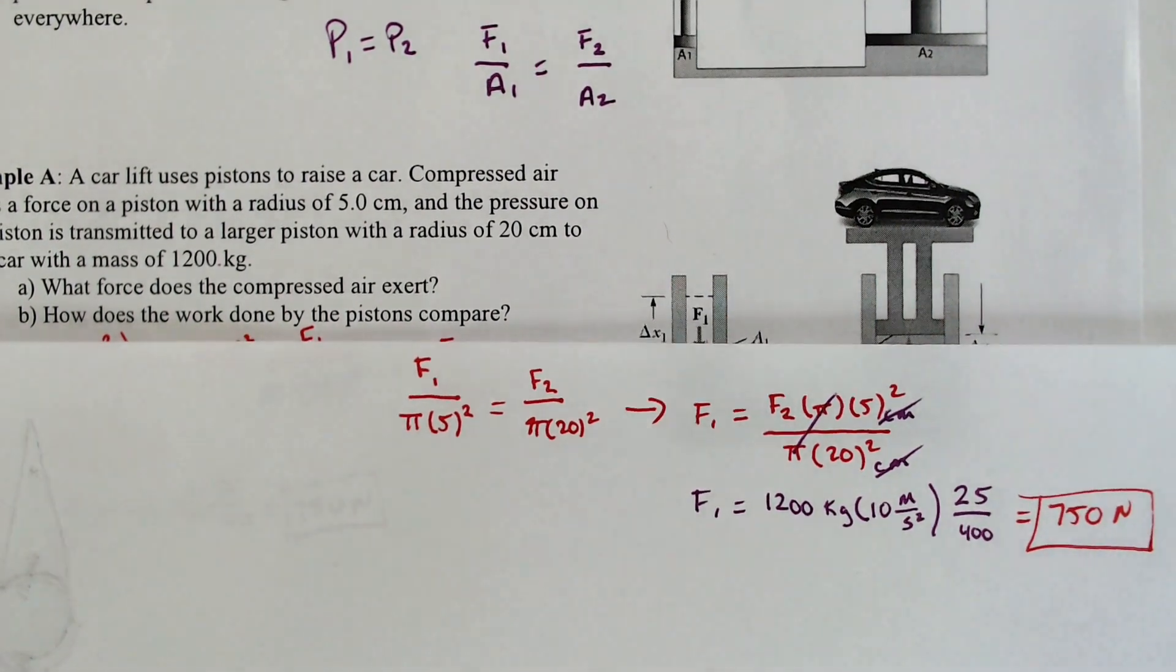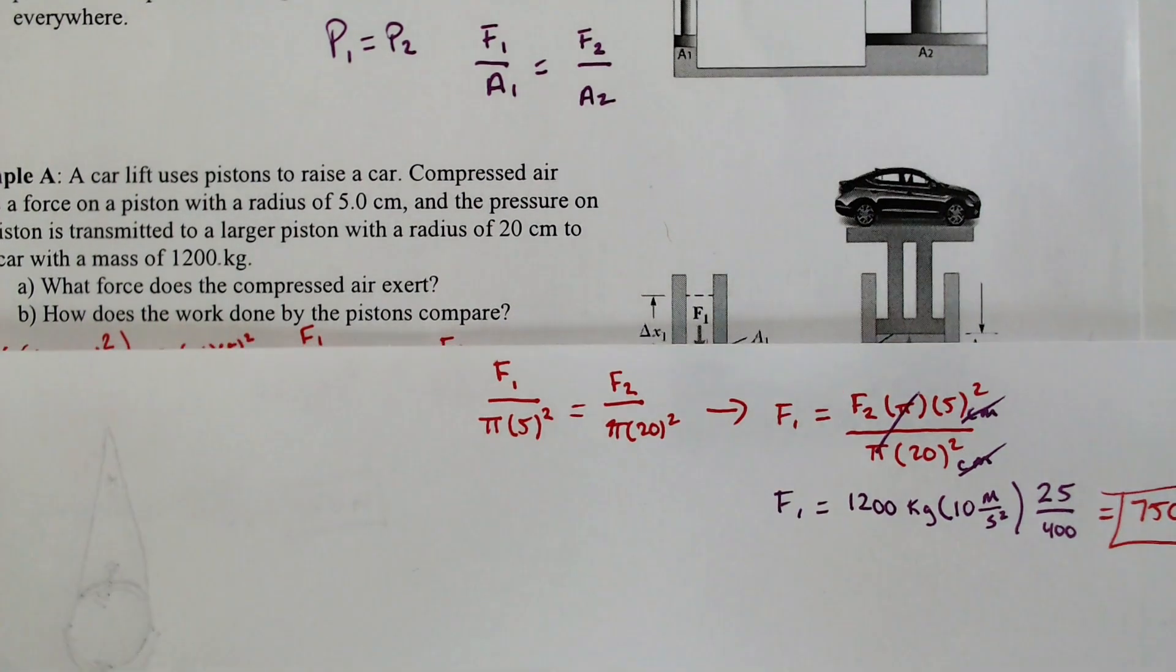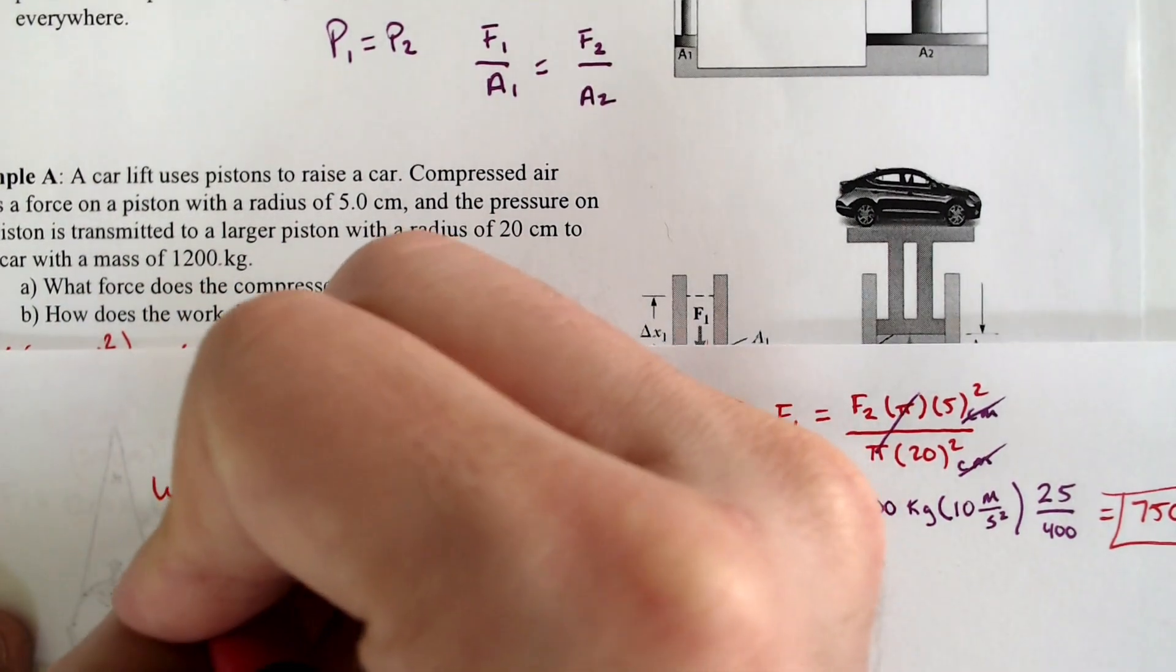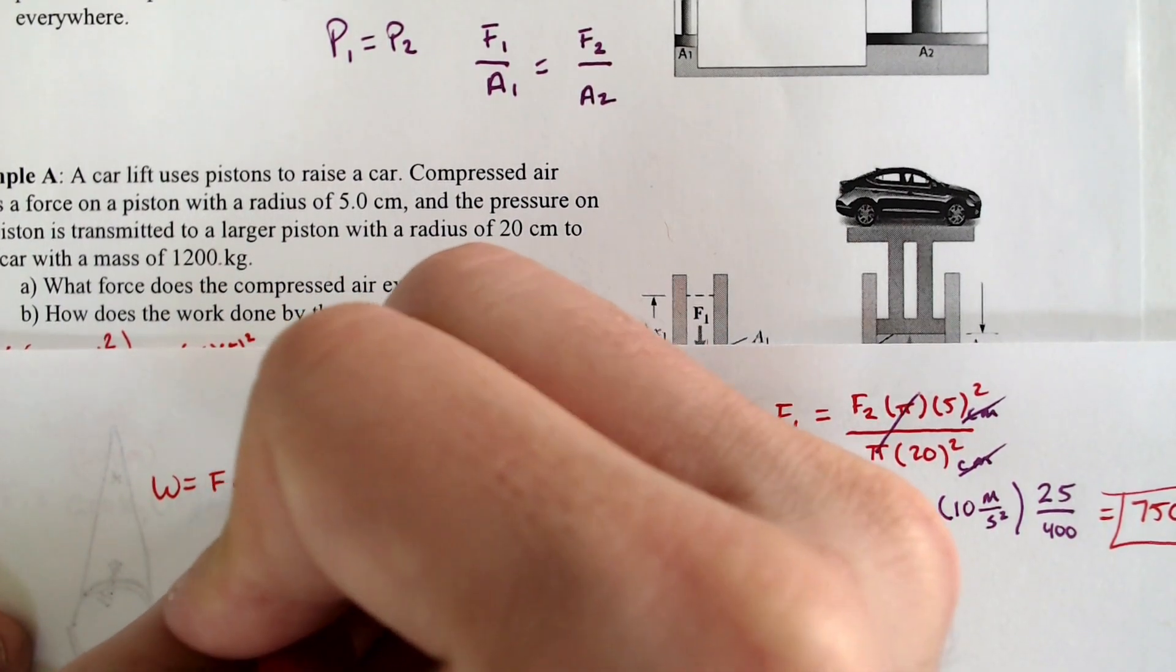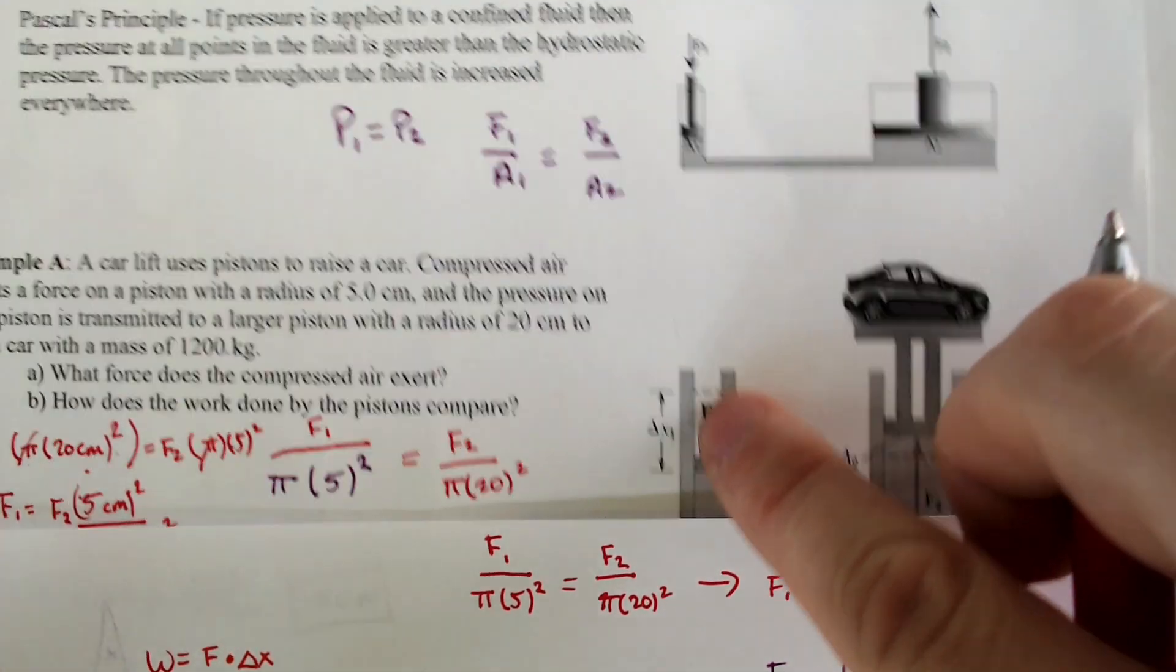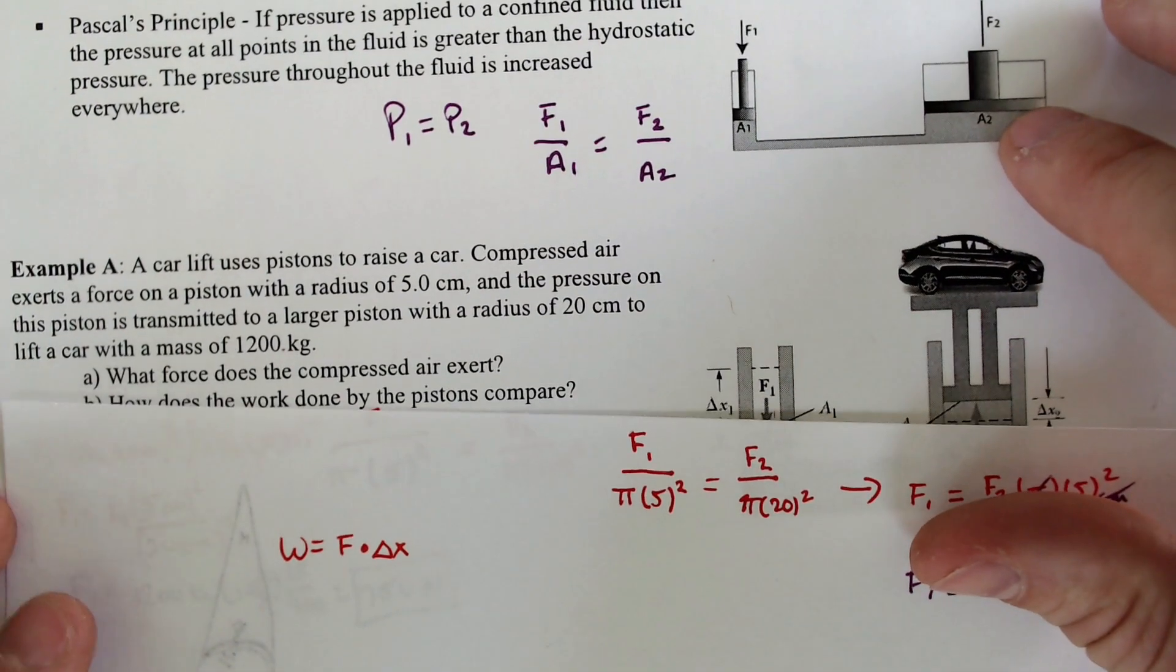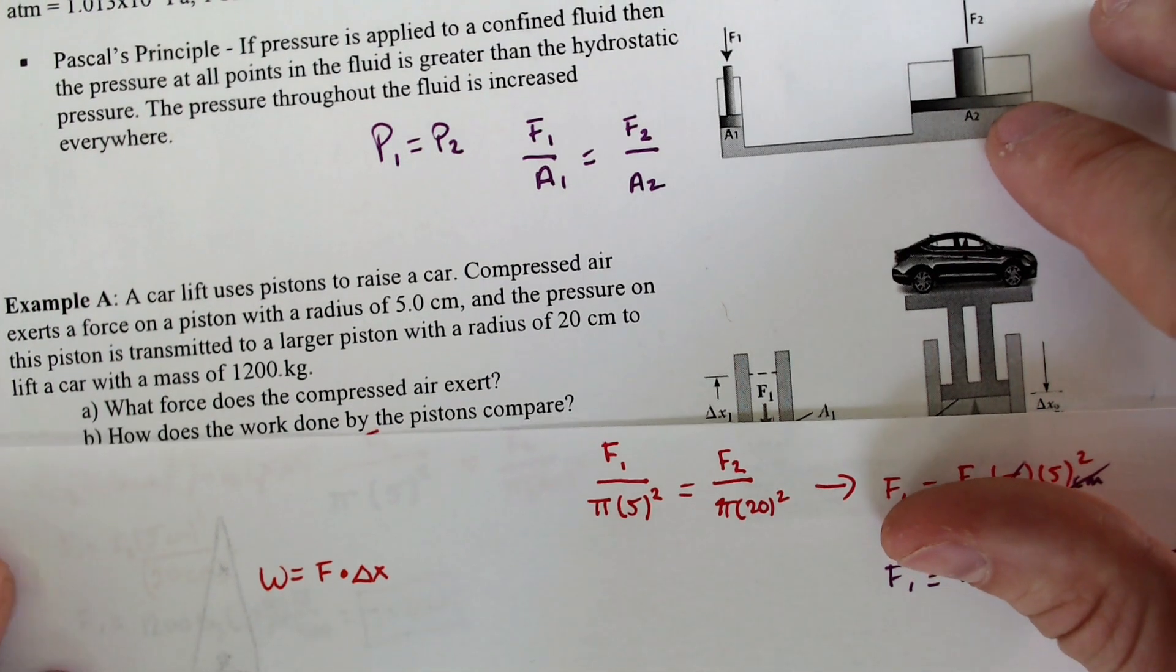750 newtons for force 1. So that's part A. What work is being done by the pistons? The work of anything is equal to force times displacement, which in this case is delta x.